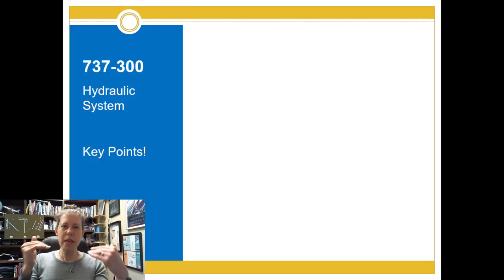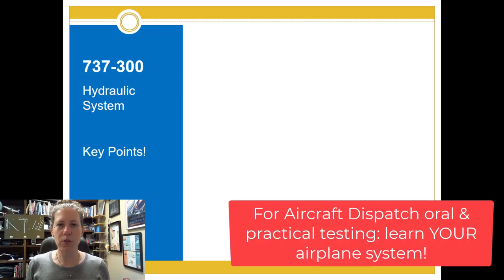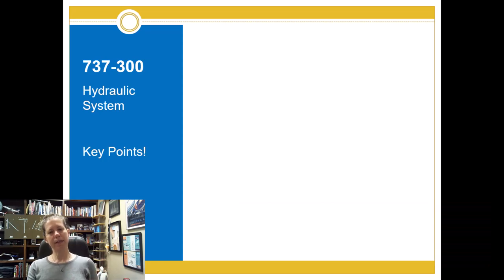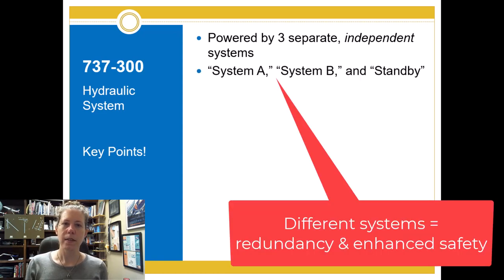So here are some key points that you would want to know as an aircraft dispatcher if you're using the 737-300 for your practical test. What we would like to tell that examiner is some highlights of the 737's hydraulic system. We've got three separate and independent hydraulic systems. The reason is for redundancy. We want to enhance safety. These systems are called System A, System B, and the standby system.